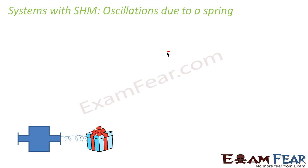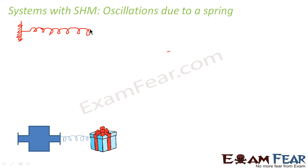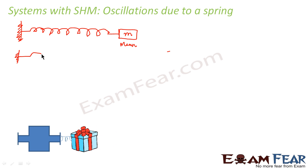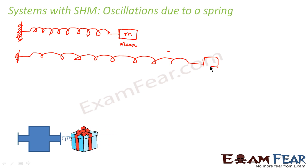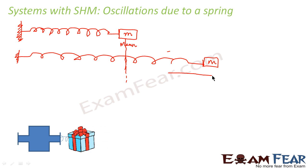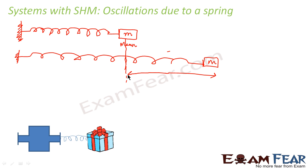Let us suppose this is your wall; from here you have a spring attached to some mass m. Let us suppose this is the mean position — here the object is at rest without any disturbance. Now let us suppose that you extend the object to some distance, say a. You have pulled this object so far — the distance from the mean position is your amplitude, just as with a simple pendulum. So this is your amplitude.